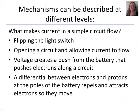And it can be described at different levels. So if you think about the current in a simple circuit and what makes it flow, flipping with a switch can. It could be that it's opening a circuit and allowing current to flow. You might explain the mechanism in terms of voltage creating a push from the battery and that that pushes electrons along a circuit. Another mechanism that you might use to explain it at a different level might be the differential between electrons and protons at the poles of the battery, repelling and attracting electrons so that they move. So mechanism has different, it really can be described at different levels. And one of the implications of that is that as you start to describe mechanism at different levels often what you talk about in terms of cause and effect changes what's actually considered the cause.